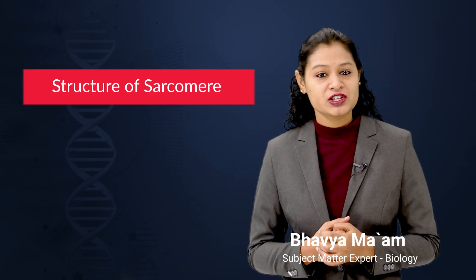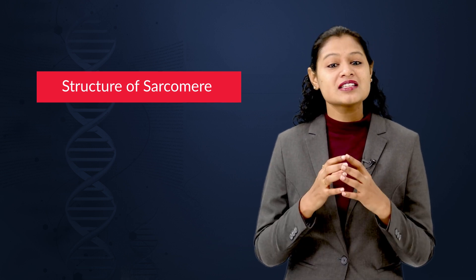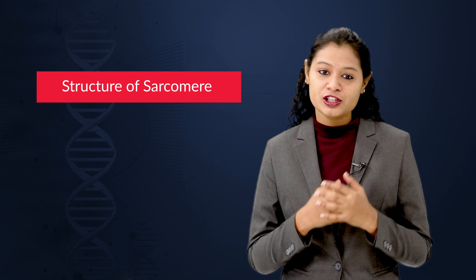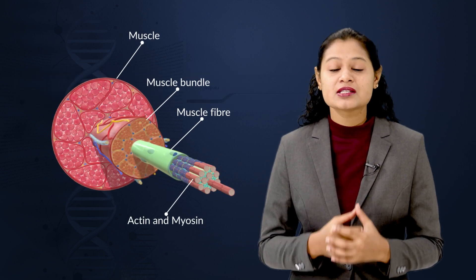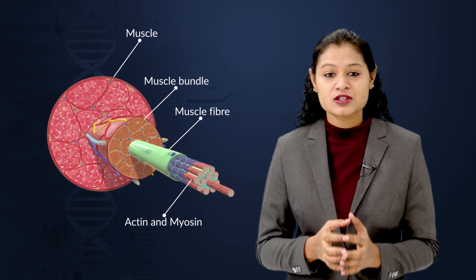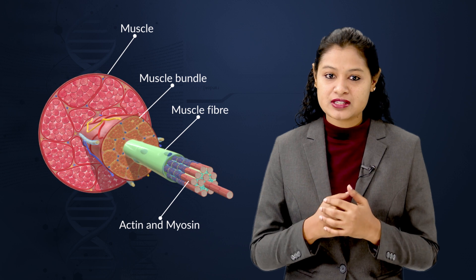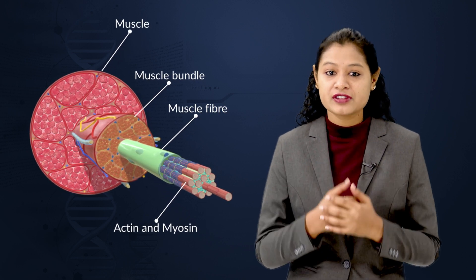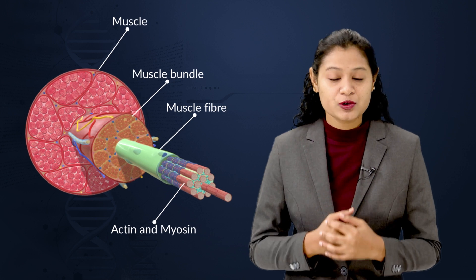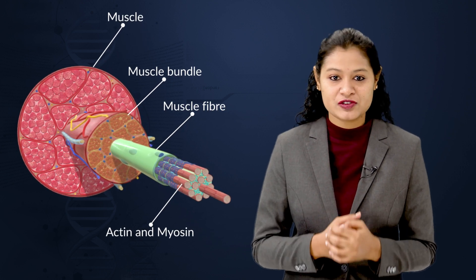Hello students, today let's talk about the structure of the sarcomere. A sarcomere is the structural and functional unit of a skeletal muscle. Inside the muscles there is presence of contractile proteins called the actin filaments and the myosin filaments. The arrangement of these actin and myosin filaments inside the sarcomere will help us understand the mechanism of muscle contraction.